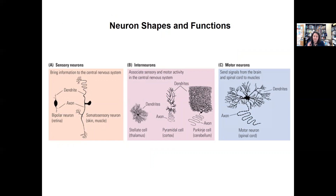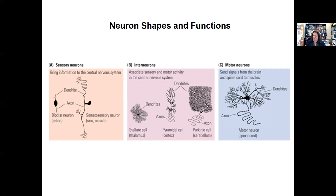We're going to talk about neurons. We have different types. Sensory neurons bring information to the central nervous system from your skin, muscles, and organs. Interneurons associate sensory and motor activity in the central nervous system — they're sort of in between. Motor neurons send signals from the brain and spinal cord to your muscles to tell you to move. Even though we've traditionally been taught there's one structure for what a neuron looks like, these different types actually look a little different, particularly in the area of the dendrites.